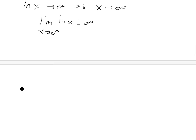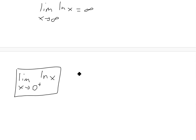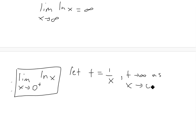Now let's look at the limit as x approaches 0 from the right side, since the domain is from 0 to infinity. The way the calculus book handles this is to let t equal 1 over x. Then as x approaches 0 from the right side, t will go to infinity — because 1 divided by a very small positive number becomes very large. Rearranging gives x equals 1 over t.